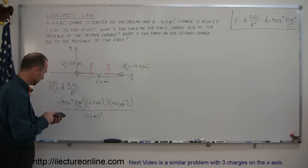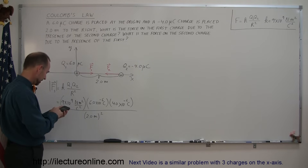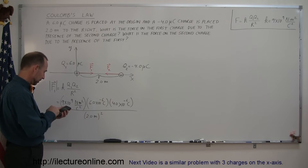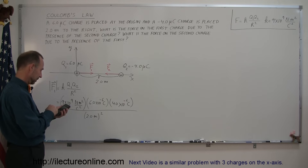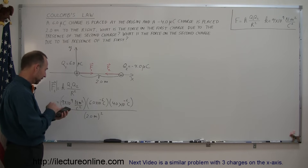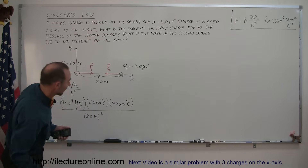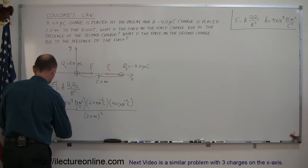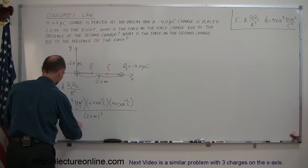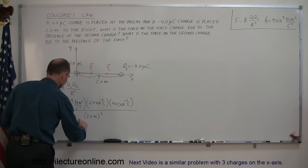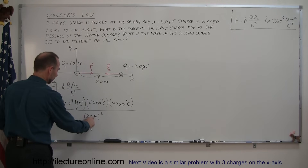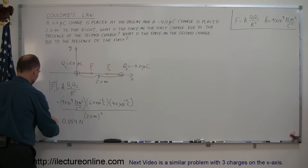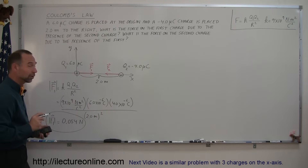Plugging those numbers into the calculator — 9e9 times 6e-6 times 4e-6 divided by 2 squared — the result is 0.054 Newtons. The meter squared and Coulomb squared units cancel out, so we're just left with Newtons. The magnitude of that force is equal to 0.054 Newtons.